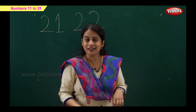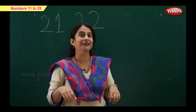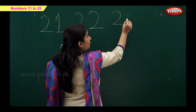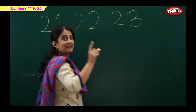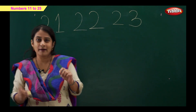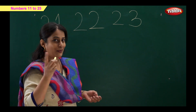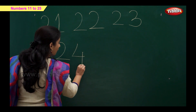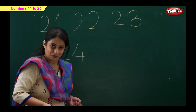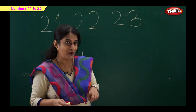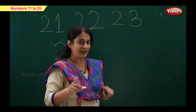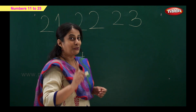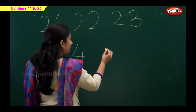What comes after 22? 23! Correct — that's 2 and 3 is 23. And what comes after 23? 24! 2 and 4 is 24. And now the last one is 25 — now it's your turn to tell me how to write 25. 2 and 5 is 25. That's correct!